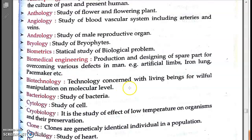Biotechnology is concerned with living beings for willful manipulation at the molecular level. For example, insulin is produced using biotechnology — a particular gene is incorporated into an organism and then mass produced. Biotechnology also includes genetically modified plants, biofuels synthesized through biological plants, and mass-scale production of vaccines.